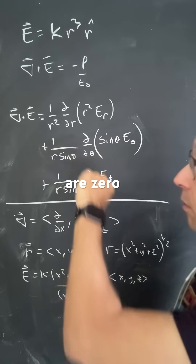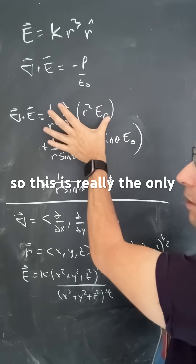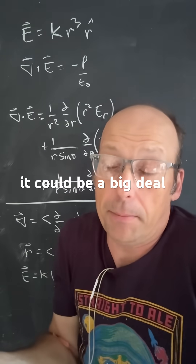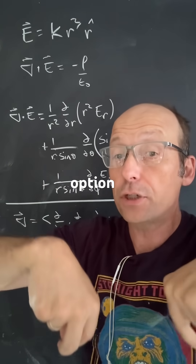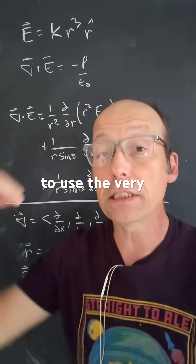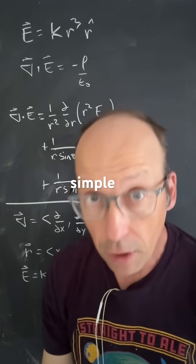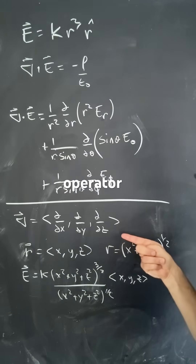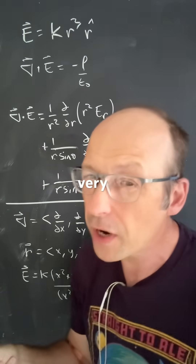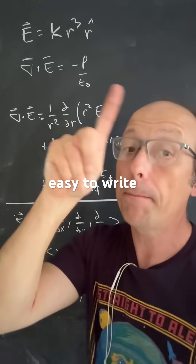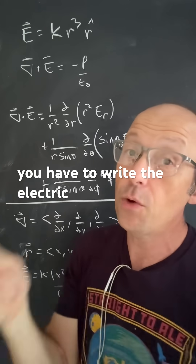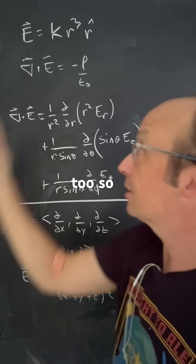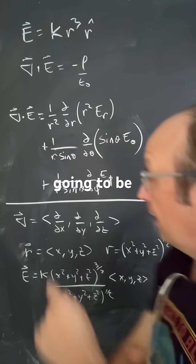So that's really the only term you have to worry about, though technically it could be a big deal. The other option is to use the much simpler del operator in Cartesian coordinates, which is very easy to write — but then you have to write the electric field in Cartesian coordinates too.